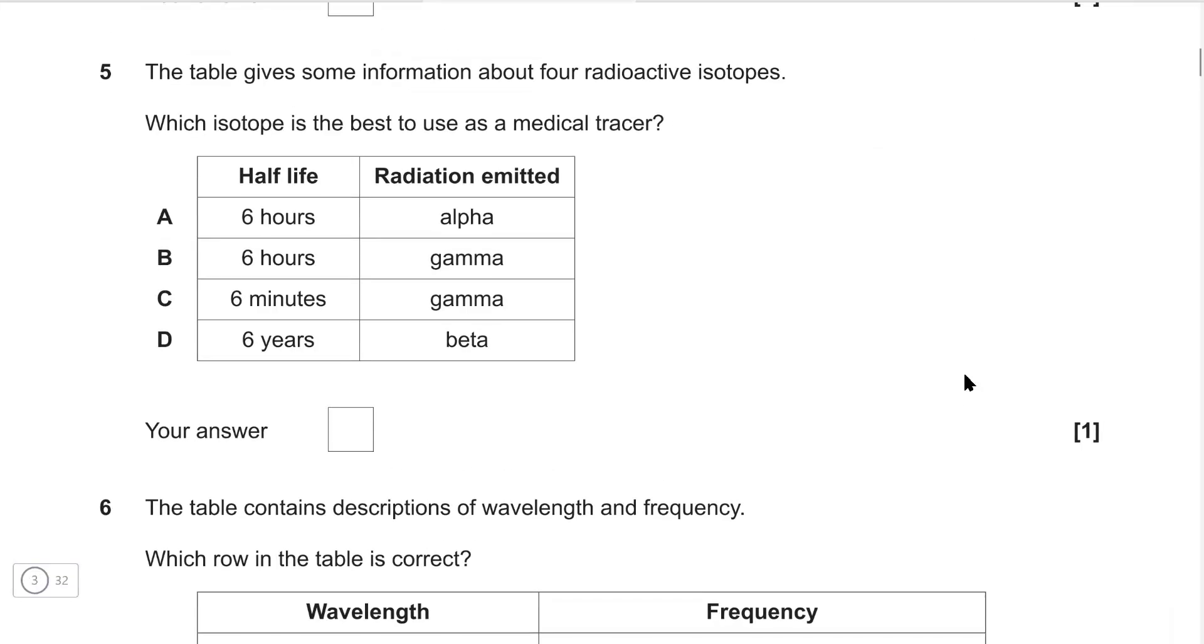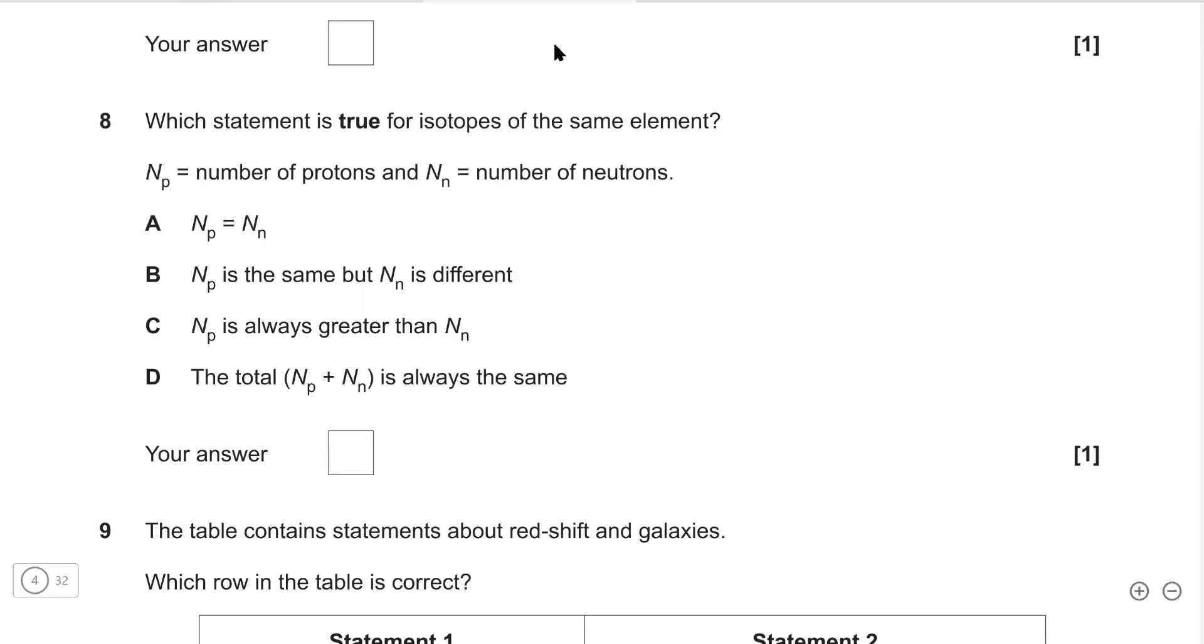The table gives some information about four radioactive isotopes. Which isotope is best used as a medical tracer? If it's used as a medical tracer, it has to go through the tissue of the body. The only one that can do that is gamma, so it's either B or C, and we want the one with the larger half-life so we can produce an image. I'm going with B, which is the correct answer. Which statement is true for all isotopes? An isotope will have the same number of protons but a different number of neutrons, and this corresponds to B.